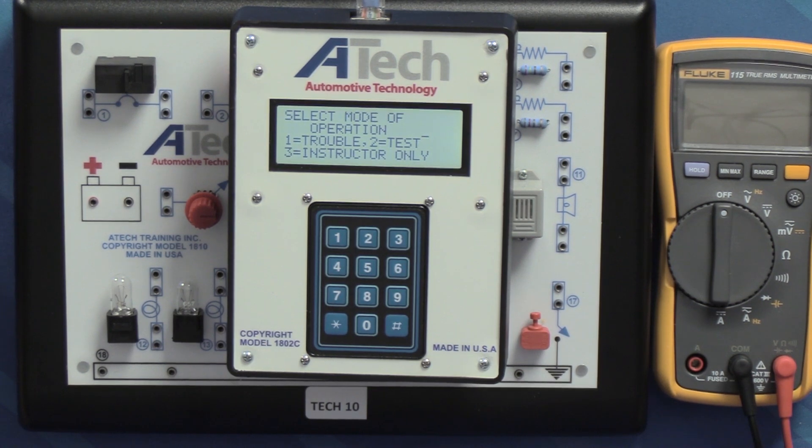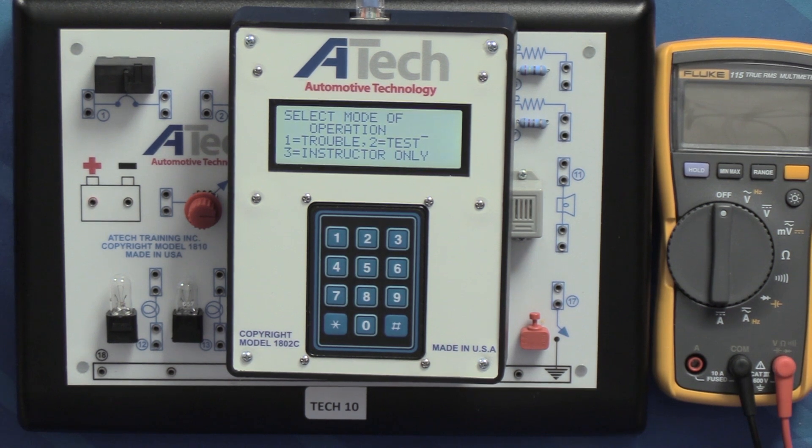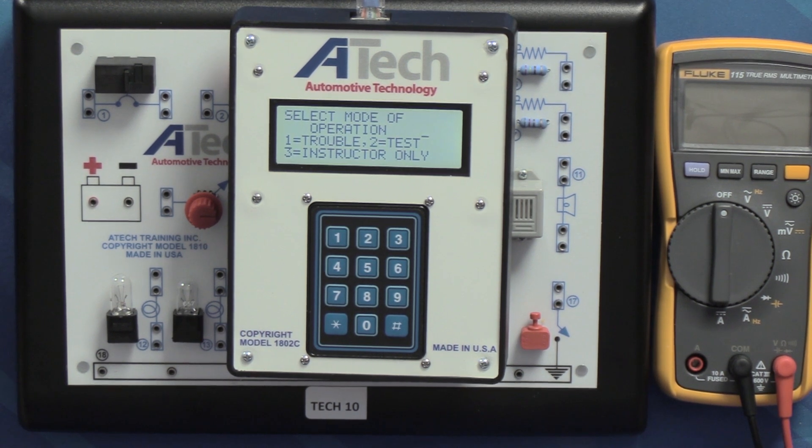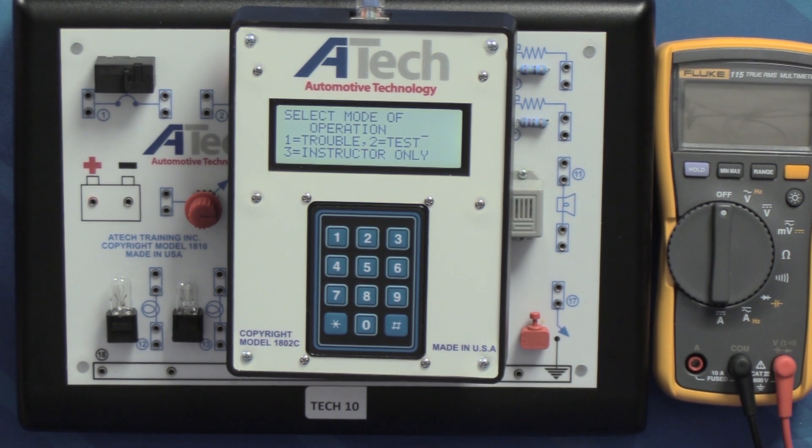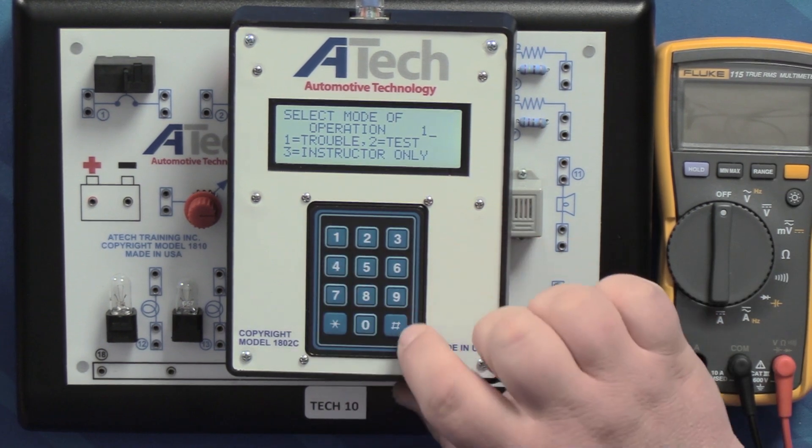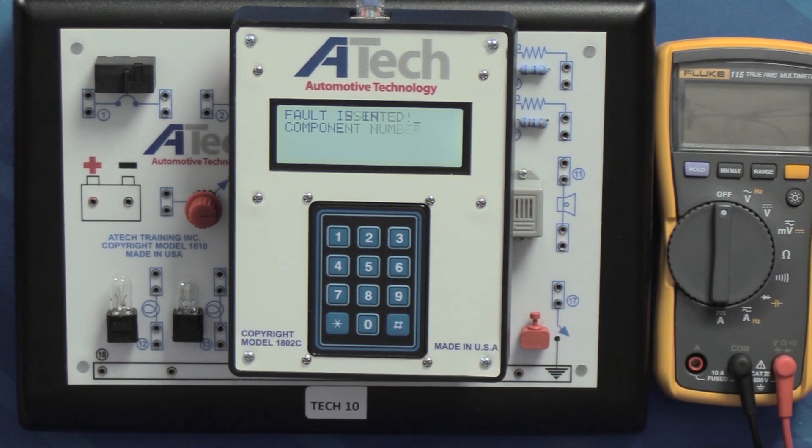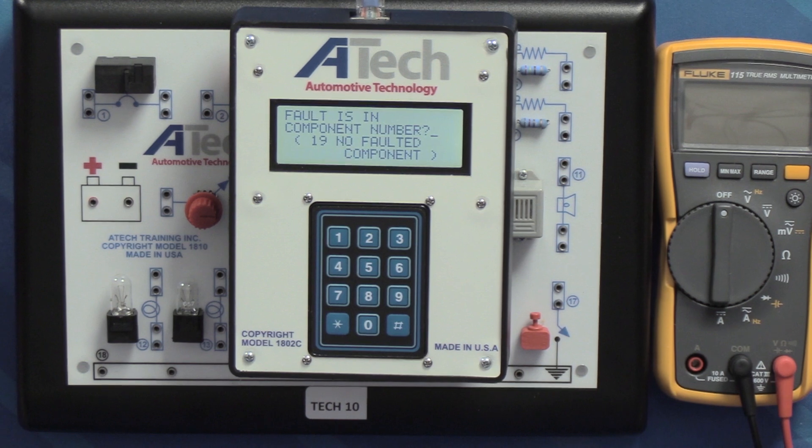Mode number one is troubleshooting, mode number two is for testing, and mode number three is for instructor only. Detailed instructions for all these different modes of operation are available in the operations manual provided with this trainer. For today's video we're just going to look over troubleshooting, so we're going to go ahead and press number one and then pound, and then that's going to go ahead and insert our fault.